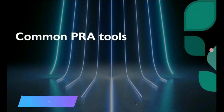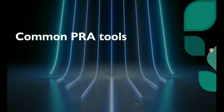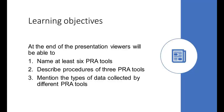There are different PRA tools — Participatory Rural Appraisal tools. These PRA tools number more than 100, and for different purposes, the tools are used in different ways; all the tools are not similar. Some tools only give some specific data. Because of that, there are numerous PRA tools. After the presentation, you will be able to name six tools of PRA, explain the procedures of at least three PRA tools, and describe types of data collected by common PRA tools.